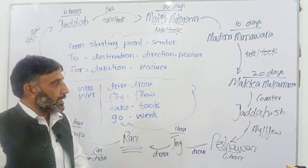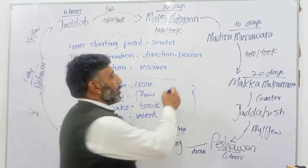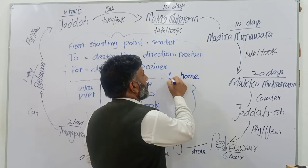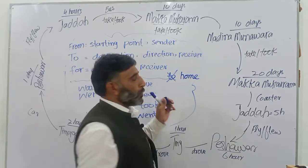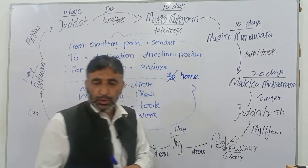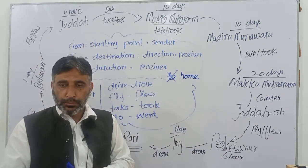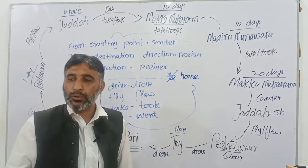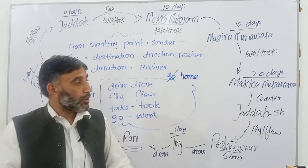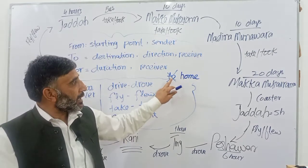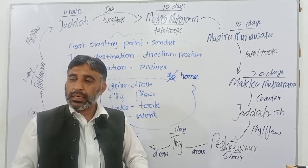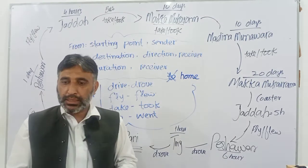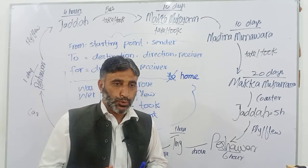Where are you going? To the post office, to the mosque, to school — we use 'to' before the destination. However, you must remember that we do not use 'to' before 'home.' 'Where are you going home' — you should not use 'to' before home. This is an exception; grammar rules don't always apply.